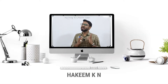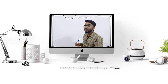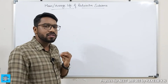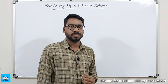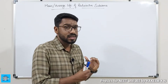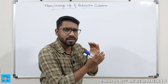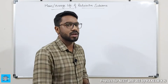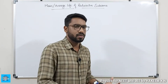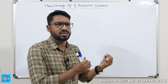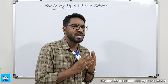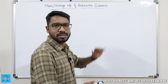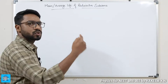Hello students, welcome to a new video lecture of our channel Physics for Me. In this video lecture we are going to discuss mean life or average life of a radioactive substance. We are discussing the derivation — how to prove that mean life tau equals 1 by lambda, where lambda is the decay constant or disintegration constant. This proof requires integration by parts.